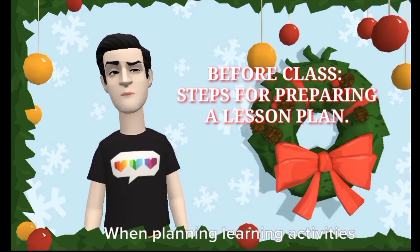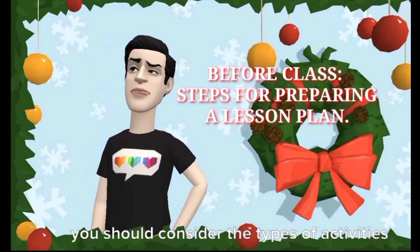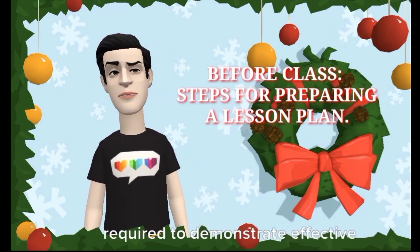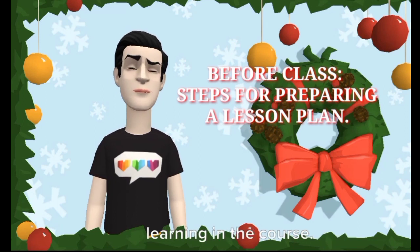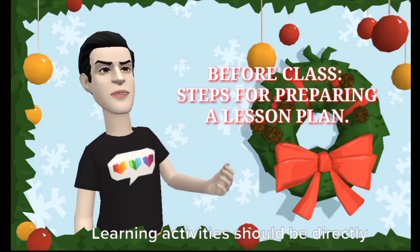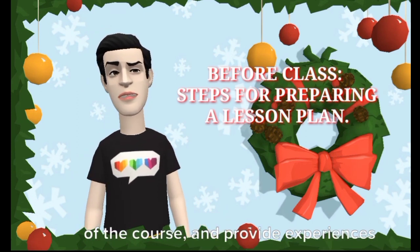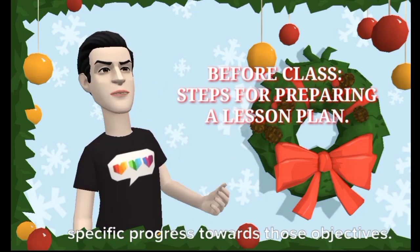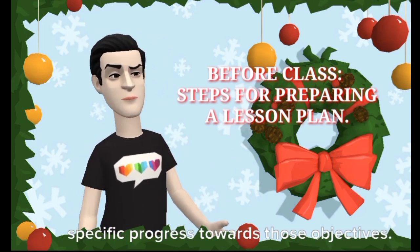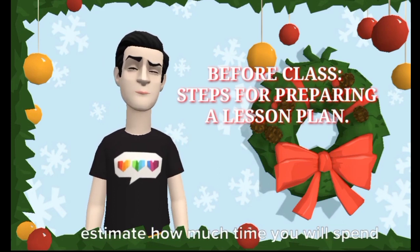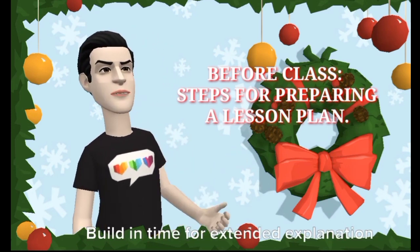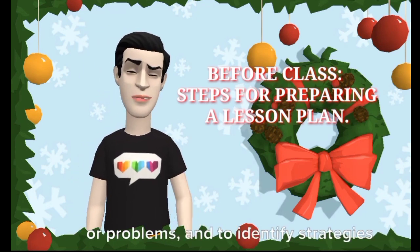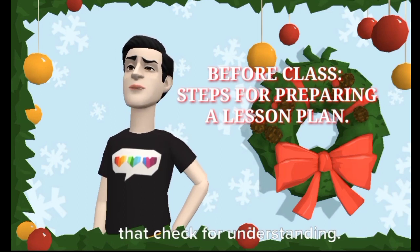Step 2: Plan the specific learning activities. When planning learning activities, you should consider the types of activities students will need to engage in, in order to develop the skills and knowledge required to demonstrate effective learning in the course. Learning activities should be directly related to the learning objectives and provide experiences that enable students to engage in, practice, and gain feedback on specific progress toward those objectives. As you plan, estimate how much time you will spend on each activity, build in time for extended explanation or discussion, but also be prepared to move on quickly to different applications or problems.